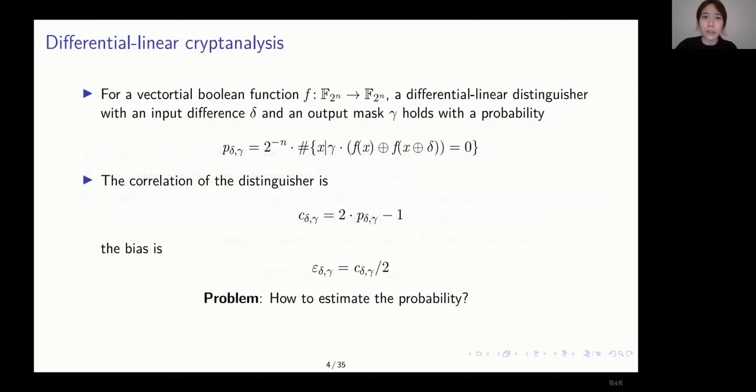For a vectorial Boolean function, given an input difference delta and an output mask gamma, we can build a differential linear distinguisher by a linear approximation on the output difference. The probability of the distinguisher is defined by the number of right inputs. Accordingly, we have the correlation as 2 times p minus 1, and the bias is half of the correlation. Now the problem is how to estimate the probability given delta and gamma.